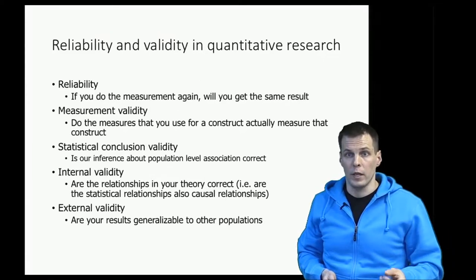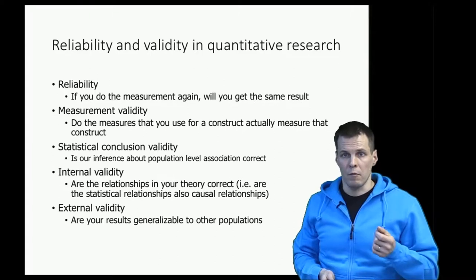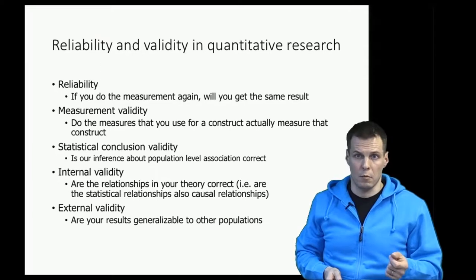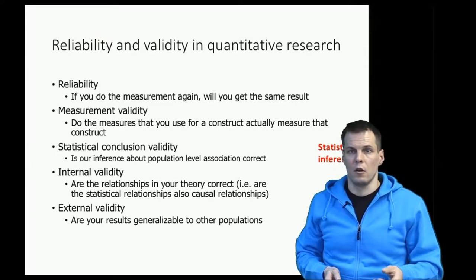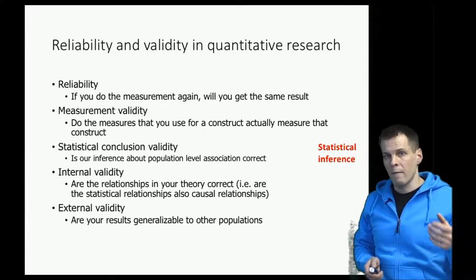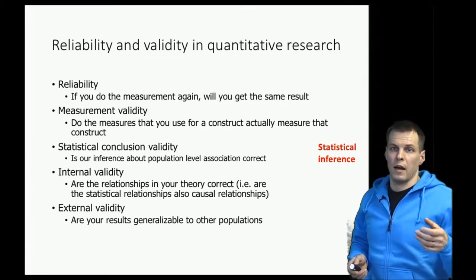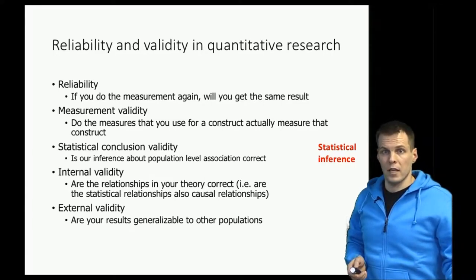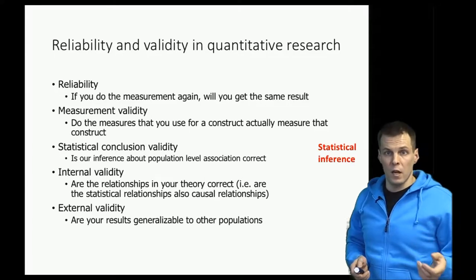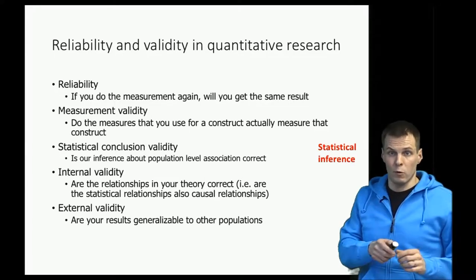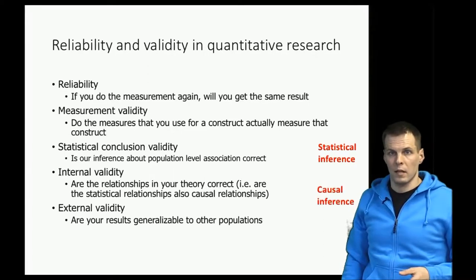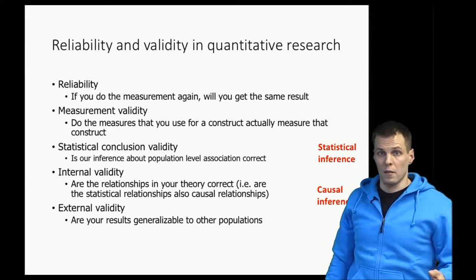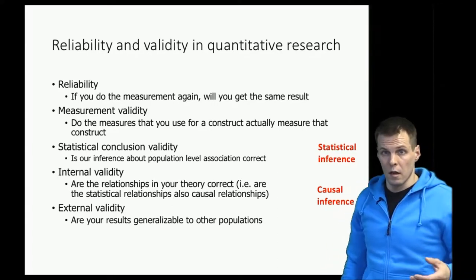Then we have internal validity, which refers to whether the relationships actually correspond to the causal relationships that we claim. Internal validity is about causal inference. So have we identified the right controls and have we controlled for them appropriately, or is our experimental or quasi-experimental design free of any possible selection effects that would confound the treatment effect? Then external validity simply refers to whether our results from one population generalize to other populations.